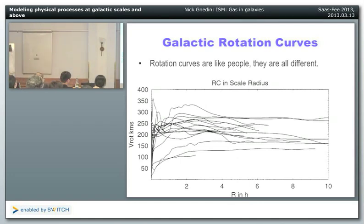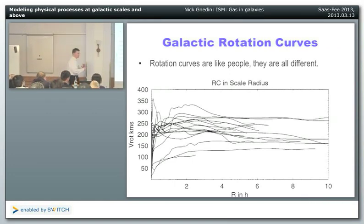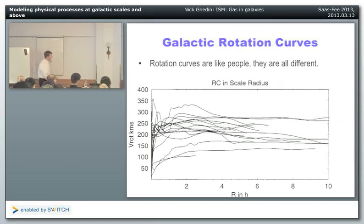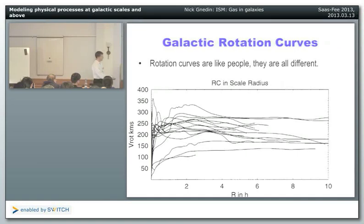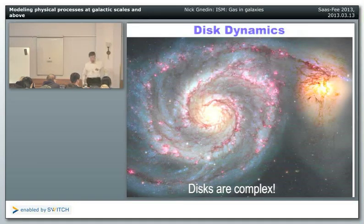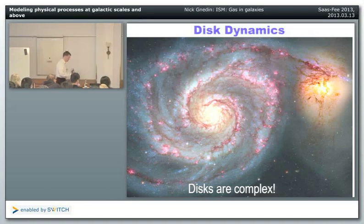Rotation curves among different galaxies are all kind of flat, but they're really all very different — some rising and then flat, some truly flat, some with bumps and wiggles. There's a huge variety. This example goes to 10 times the disk scale length — which for the Milky Way's 2.5 kiloparsec scale length would mean flat to 25 kiloparsecs. Disk dynamics is a very complex subject, with a whole sub-field of dynamical astronomy devoted to it.